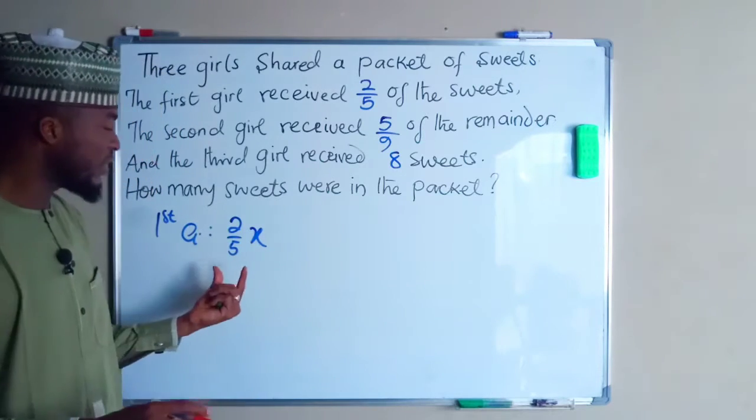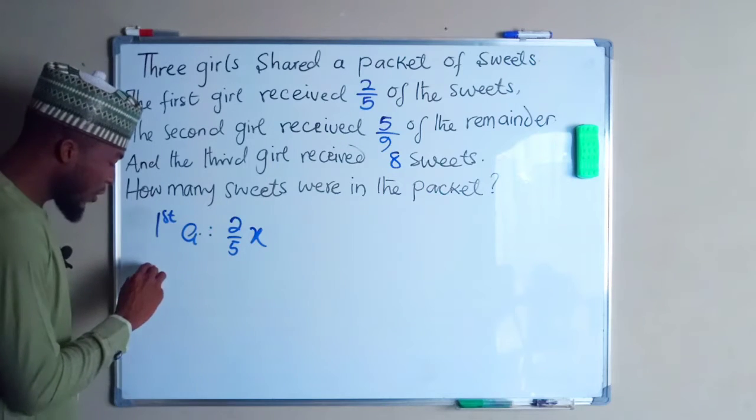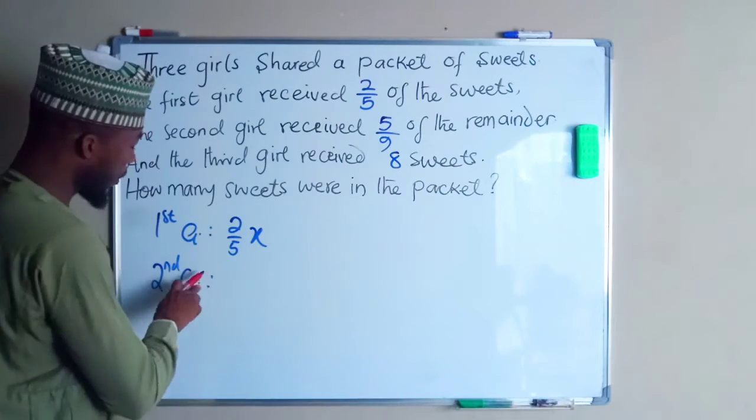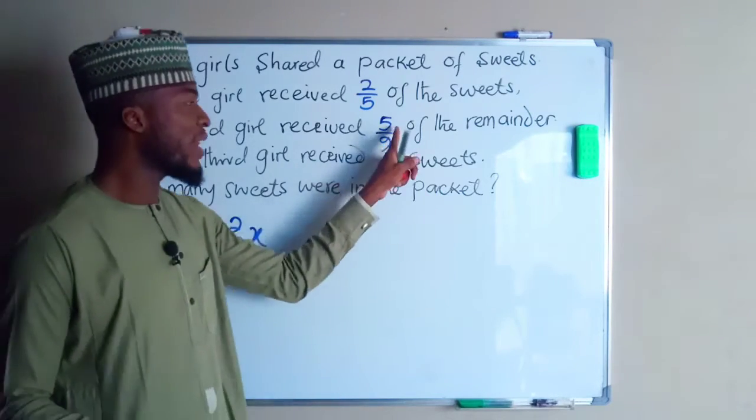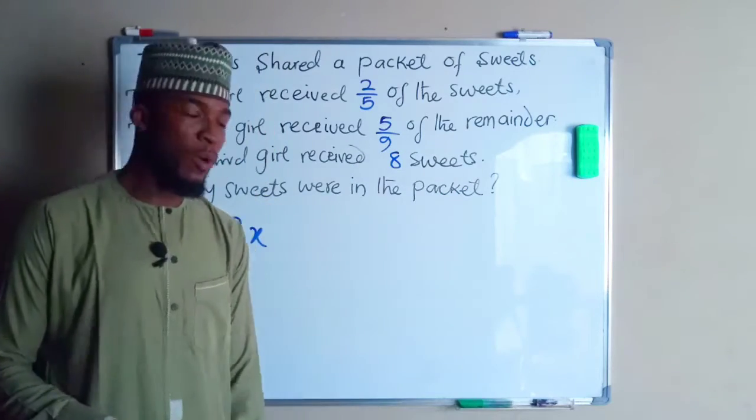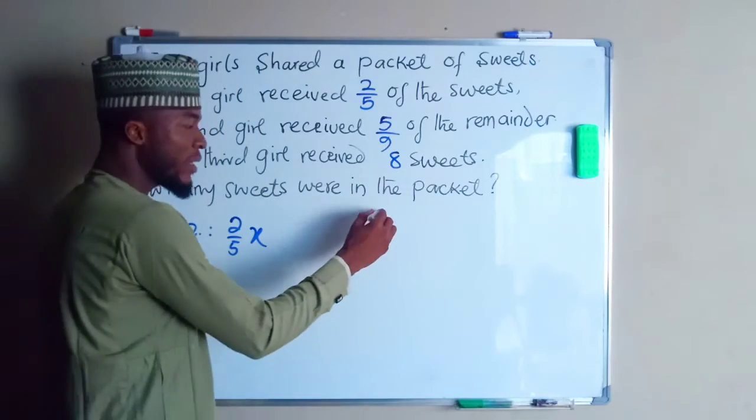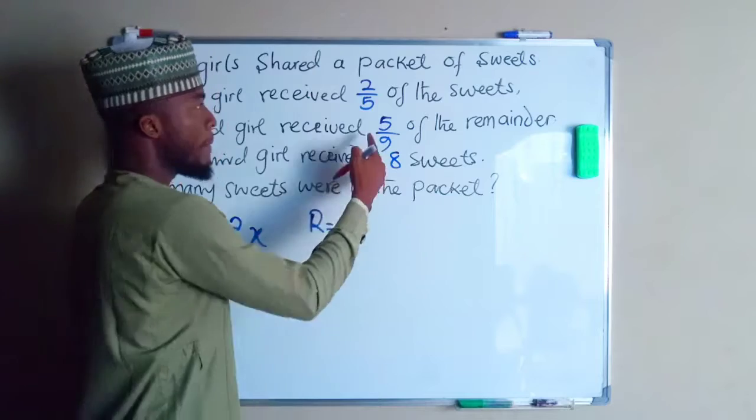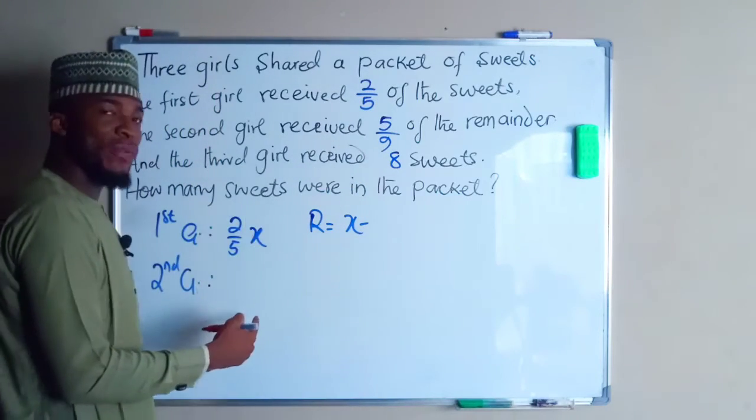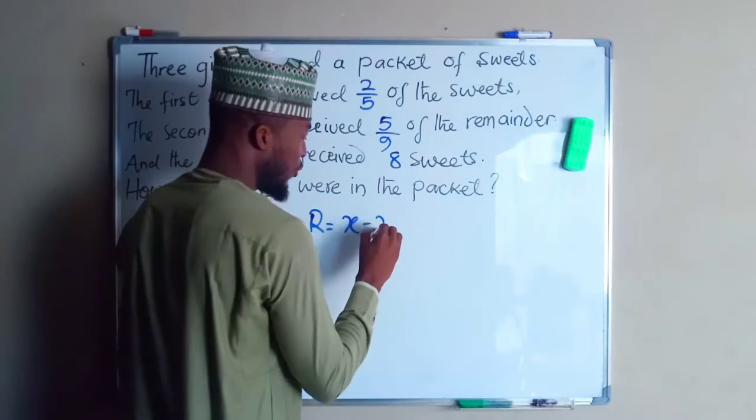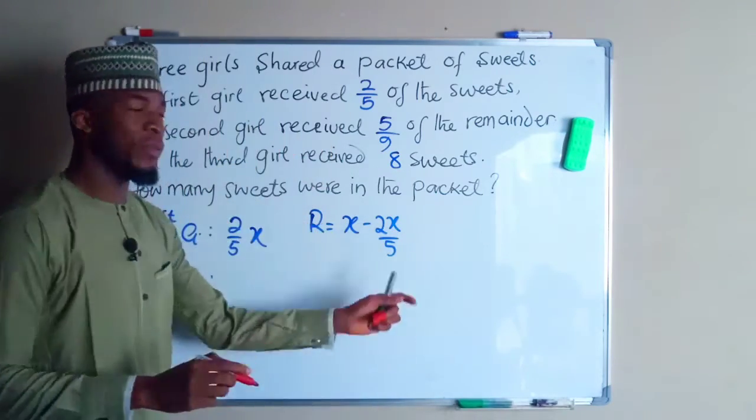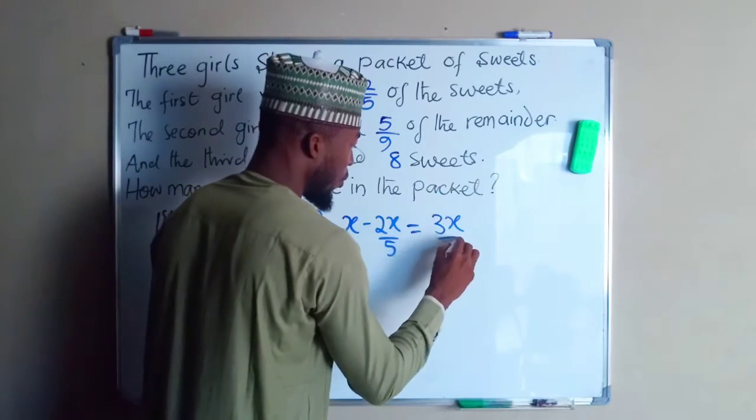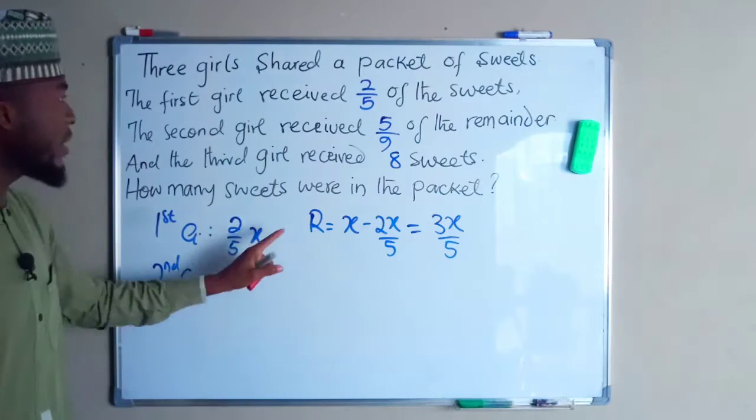Therefore the second girl receives 5/9 of the remainder. Well, we have to find the remainder first. The remainder will be X, the total number of sweets, minus 2X/5, which has been deducted initially. This will be 3X/5. So this is the remainder.